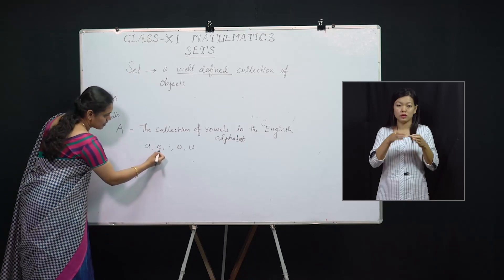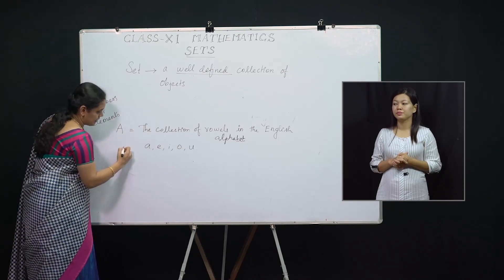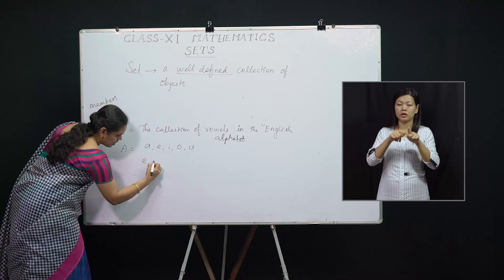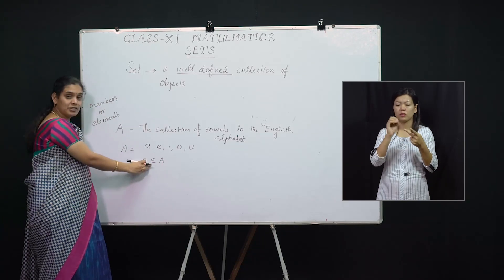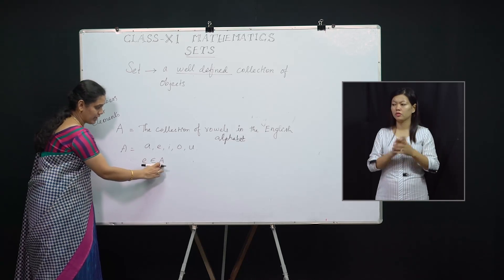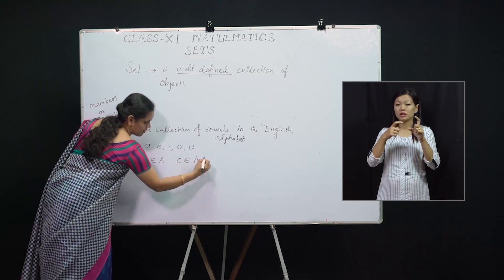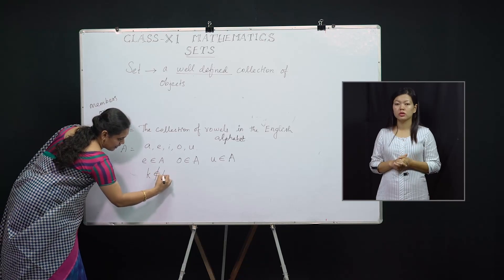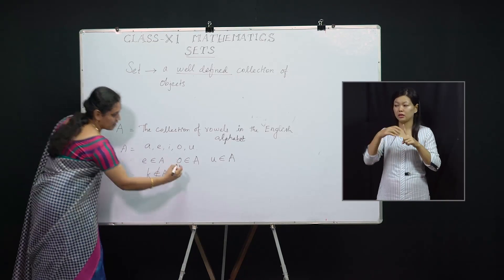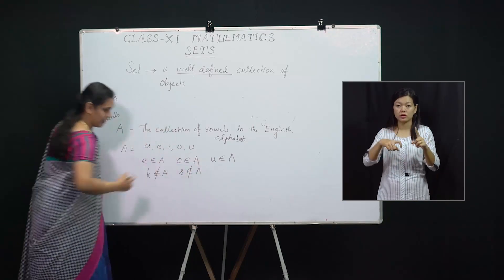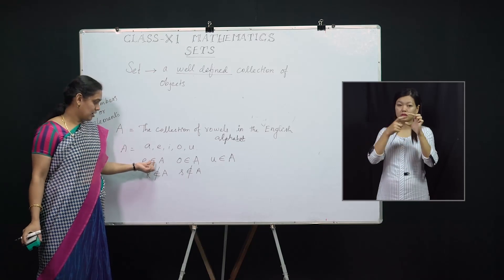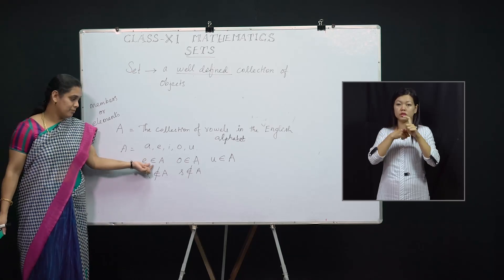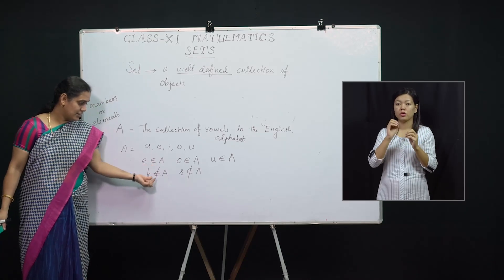E is a member in the set A. O is a member in the set A. U is a member in the set A. In short, we can write E belongs to A. This symbol denotes 'belongs to.' E belongs to A, O belongs to A, U belongs to A. Now K is not in the set, so we write K does not belong to A. S does not belong to A. You have seen this symbol in computers — this is known as epsilon, but here we call it 'belongs to.'